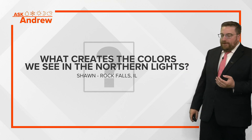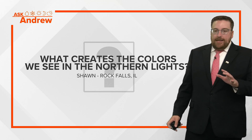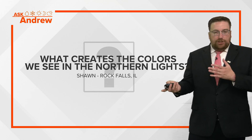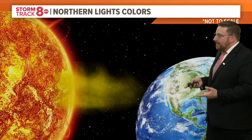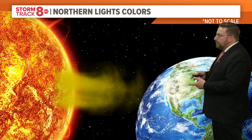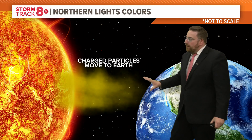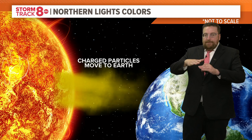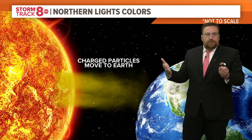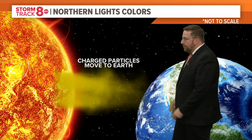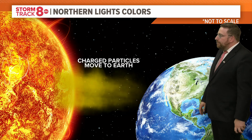This is from Sean in Rock Falls, because all the pictures you look at, some are green, some are kind of a pinkish purplish color. We're talking about the sun emitting all of this energy in what we call a solar flare, some kind of solar outburst, solar storm. These charged particles move into Earth's magnetic field, which is weakest at the poles.